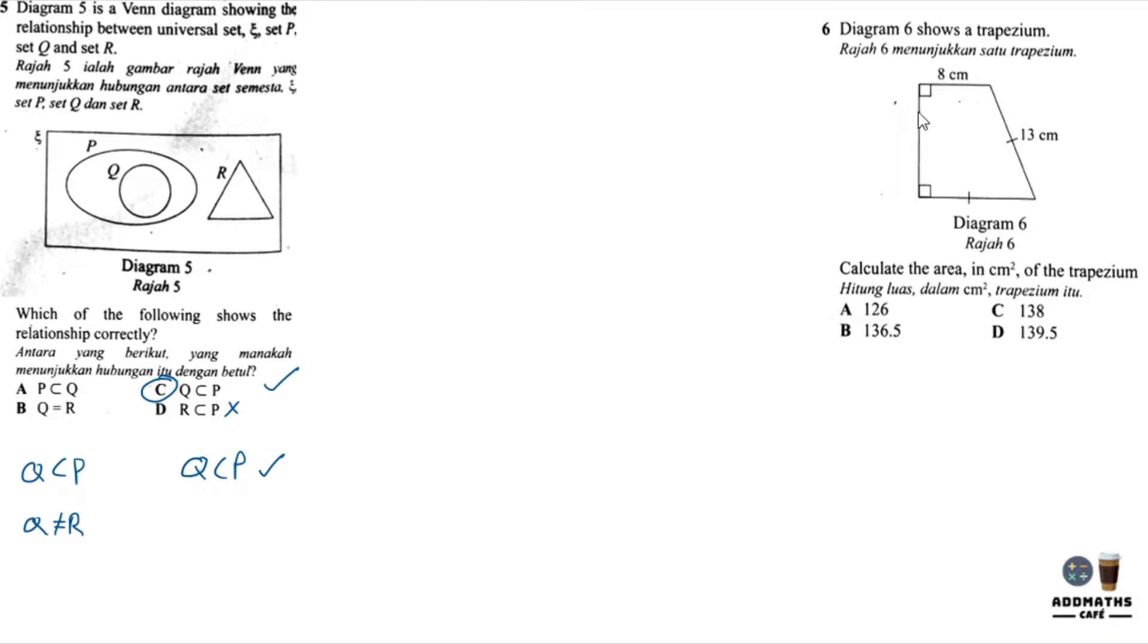Question 6 is from Form 1 Chapter 10 about perimeter and area. In this case, we are required to find the area. We need to know the height. We know that the base here is 13, same as this slanted line, so we can draw a triangle over here. Let's say we cut this off, a triangle.